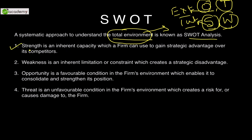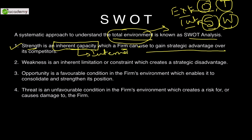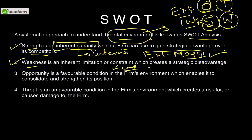Understanding each briefly: Strength is the inherent capacity which a firm can use to gain strategic advantage over its competitors. For example, Maggi's masala has not been replicated by anyone, so Maggi still has huge sales — that is their inherent strength. Weakness — Maggi could not capitalize on its production when lead was found; it became their weakness or inherent limitation, and they had to discontinue their entire stock and come up with a new one.